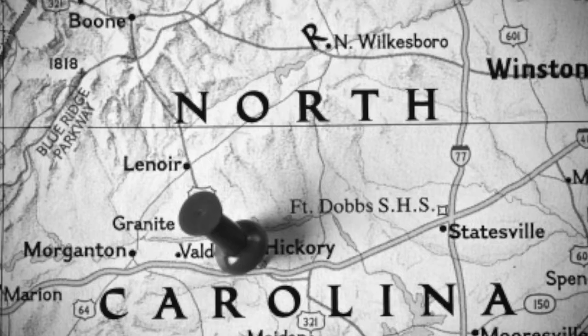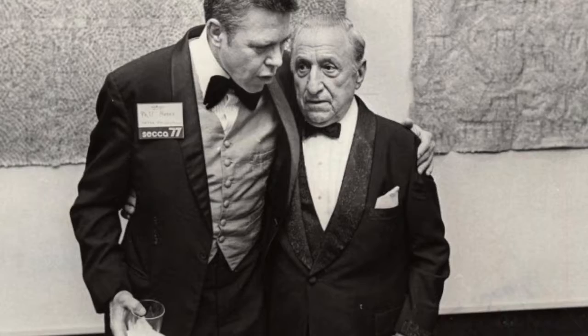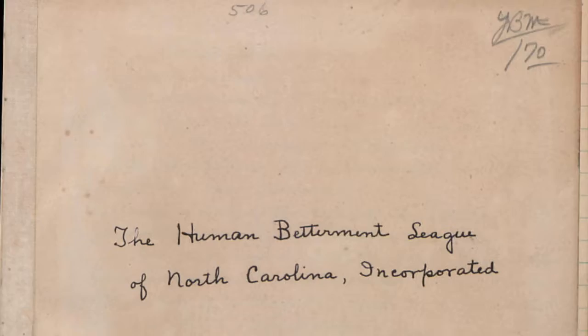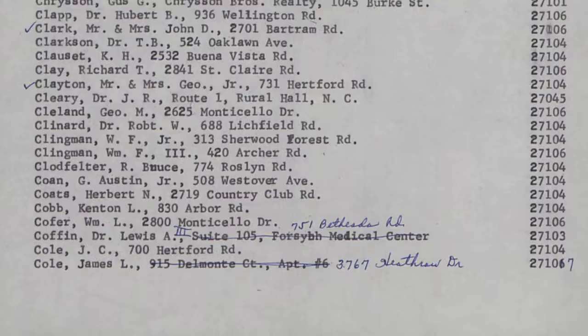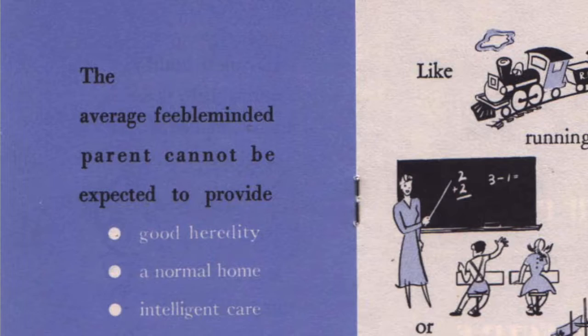Another reason why North Carolina was one of the last states to end its eugenics programs was because its supporters were powerful and persistent. In 1947, James Gordon Haynes and Clarence Gamble created the Human Betterment League. This organization recruited thousands of members and spread eugenics propaganda throughout the state. One brochure they distributed labeled people as 'morons' and 'feeble-minded' and said, 'These people cannot be expected to provide good heredity, a normal home, or intelligent care.'